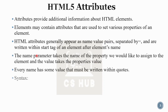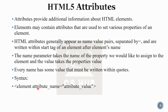Let me show you the syntax for an attribute. When you add an element, there is a tag and a name. After the element name, there is a space and then you add the attribute. The attribute has two parts: the attribute name and the attribute value, separated by an equal sign.